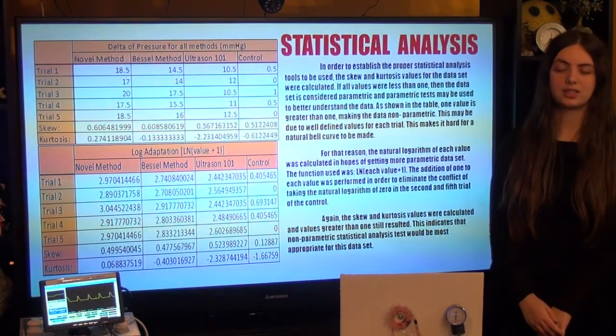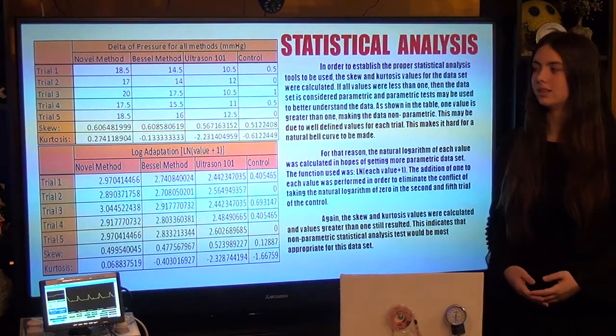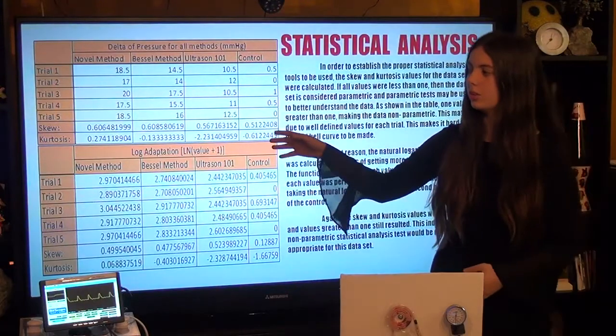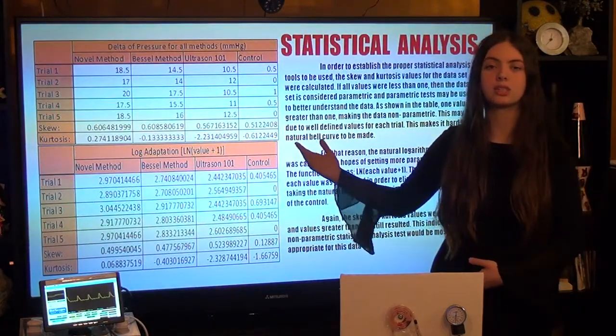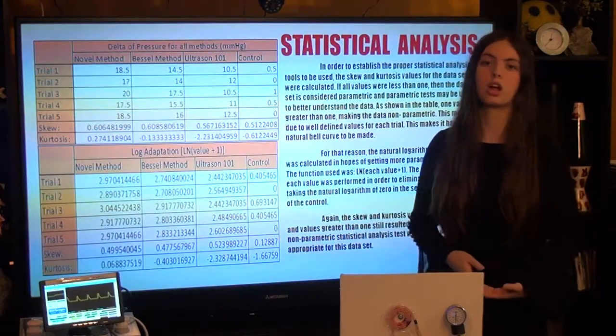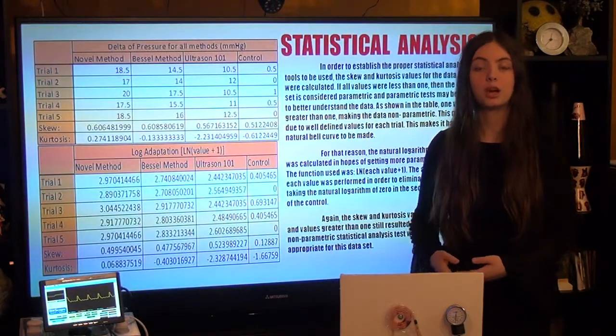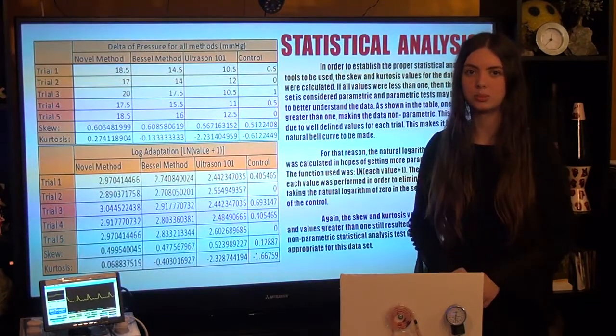Statistical analysis was conducted on the data to see if there was a statistically significant difference between the different methods. Now once the skewing kurtosis values for the raw data was calculated, there were values above one so the natural logarithm was taken of the data to try and see if a parametric statistical analysis test could be performed.